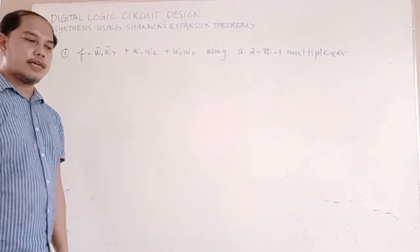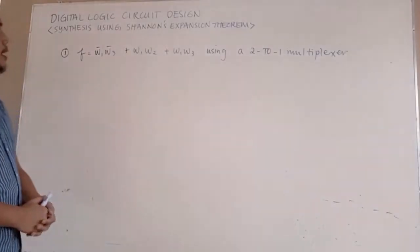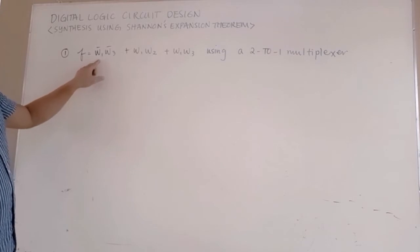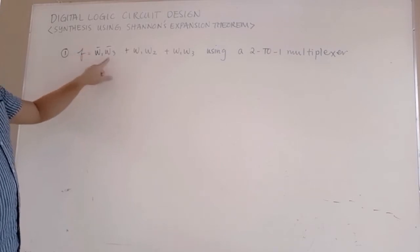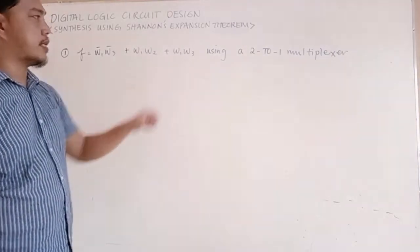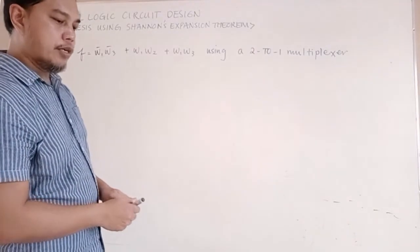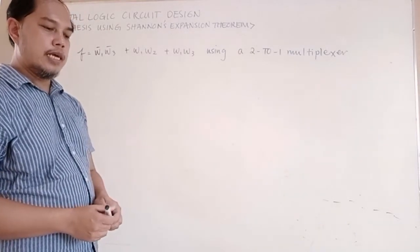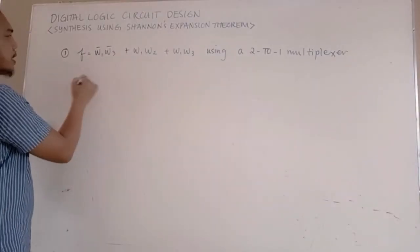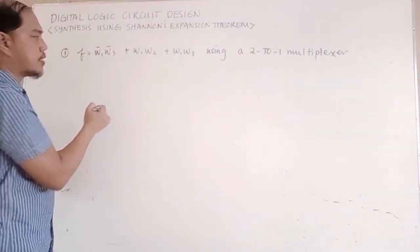To illustrate the use of Shannon's expansion, we can implement the given function F = W1-bar·W3-bar + W1·W2 + W1·W3 using a 2-to-1 multiplexer. By Shannon's expansion theorem, we write the given function as a multiplexer with select input W1.